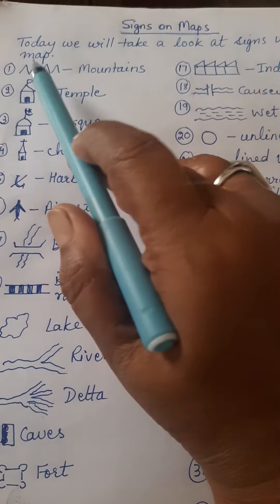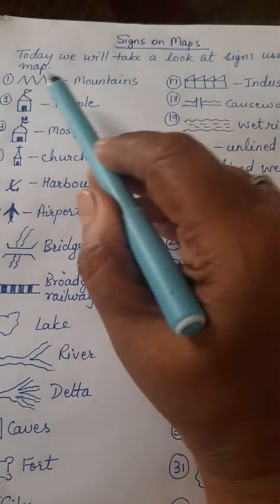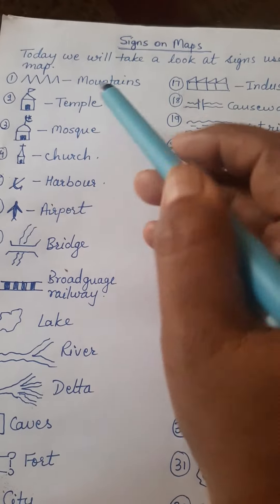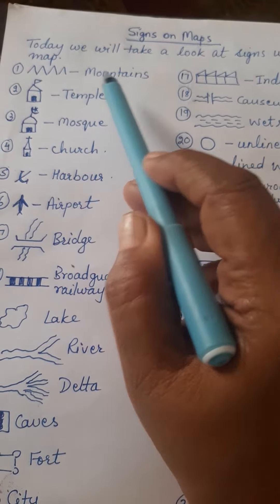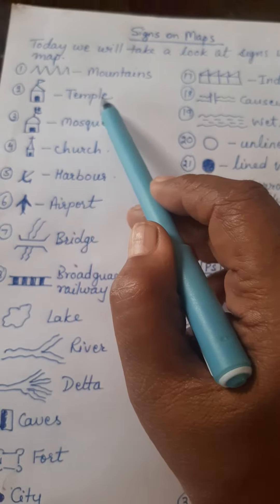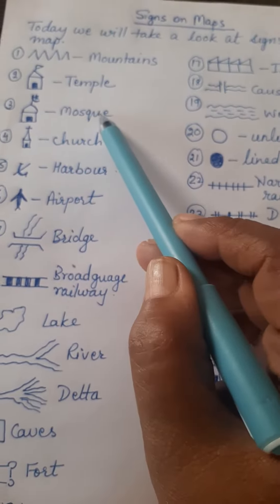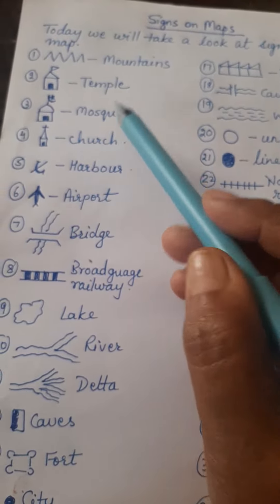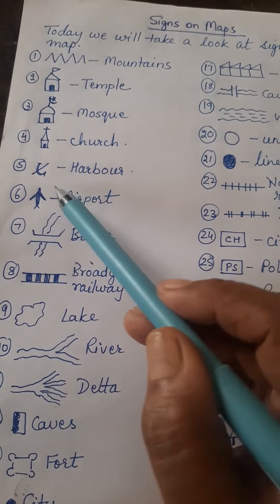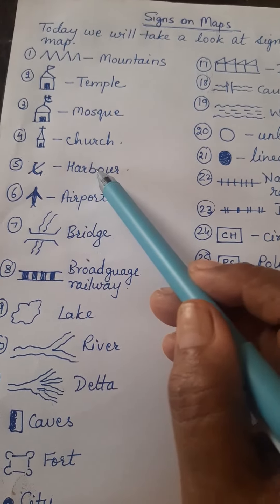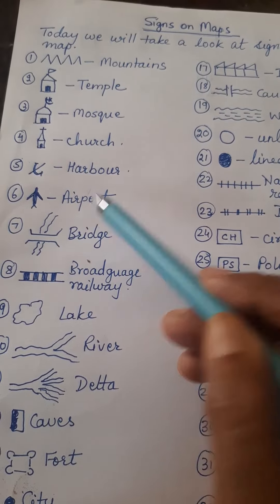Signs on the map. Today we will take a look at signs used on the map. This is the sign for mountains. This sign is for temple. This sign is for mosque. This sign is for church. This is used for harbor. This is used for airport.